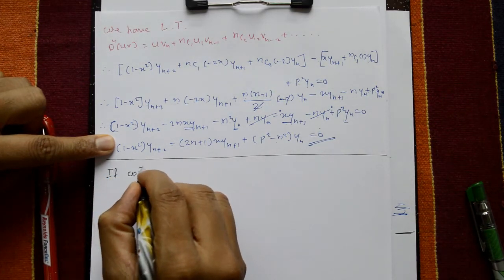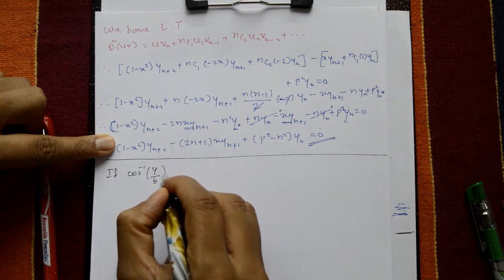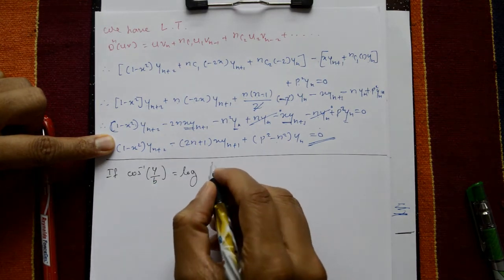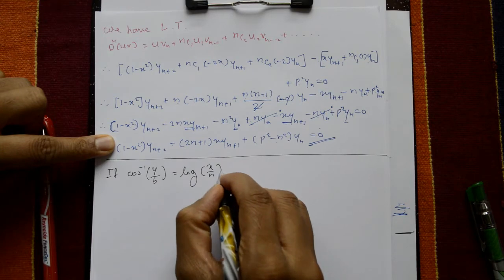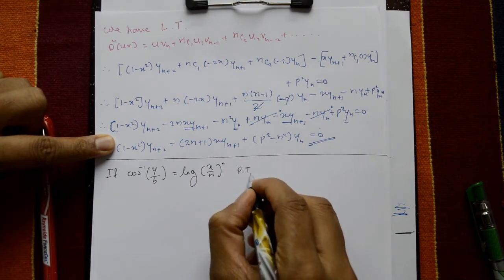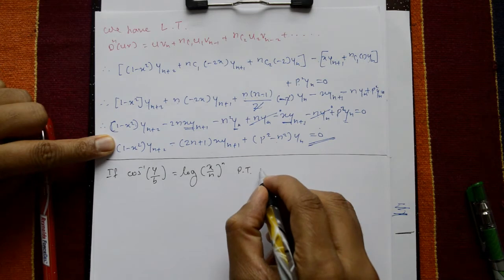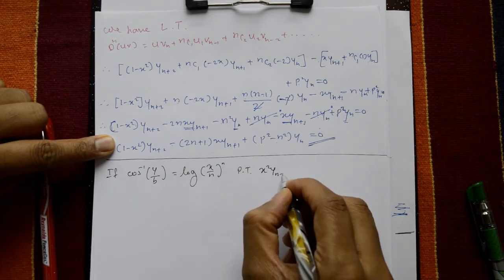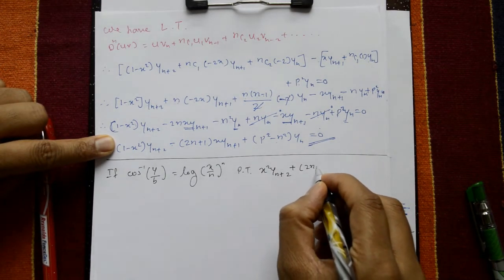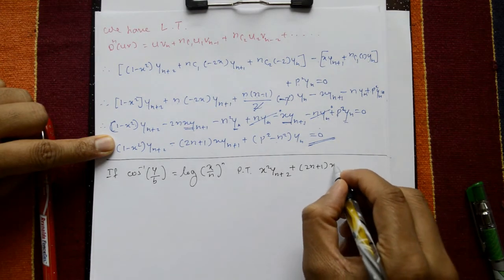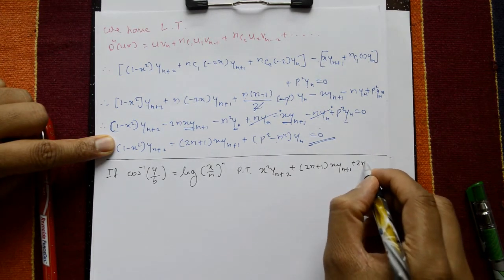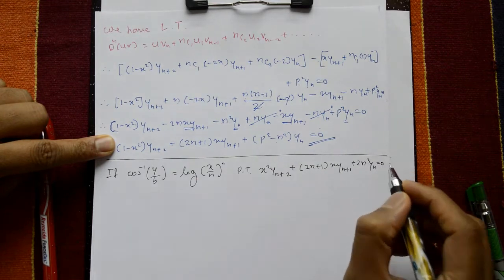Next example: given cos⁻¹(y/b) = log(x/n)ⁿ, prove that x² yₙ₊₂ + (2n+1) x yₙ₊₁ + 2n² yₙ = 0.